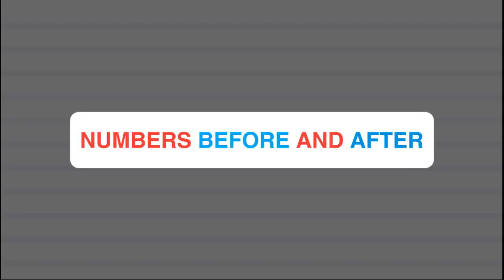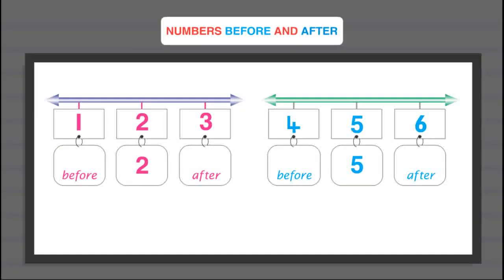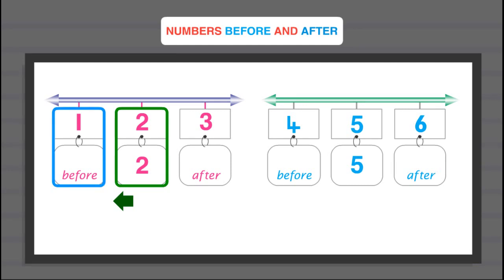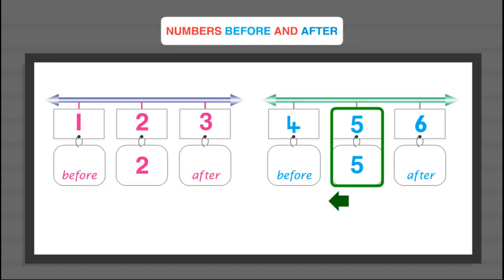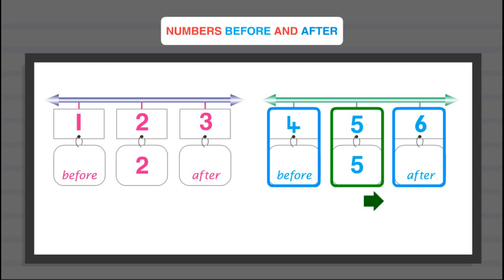Numbers before and after. Before 2 is 1. After 2 is 3. Before 5 is 4. After 5 is 6.